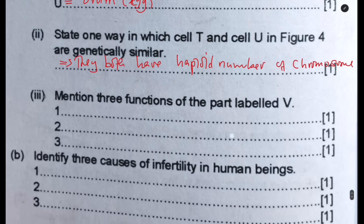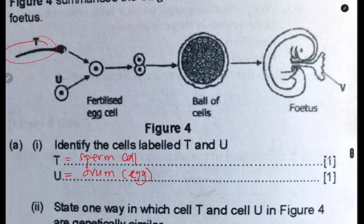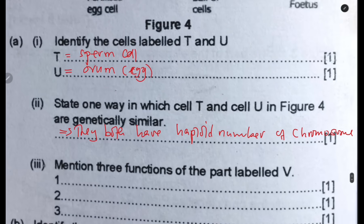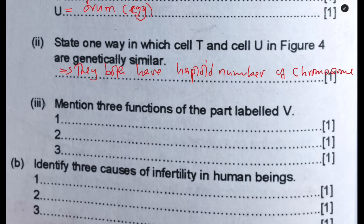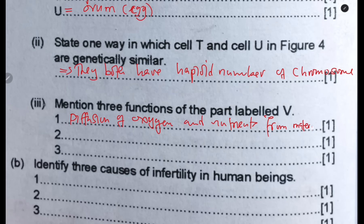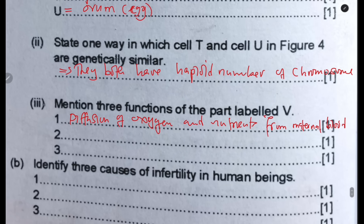Mention three functions of the part labeled U — the placenta. Function one: diffusion of oxygen and nutrients from maternal blood to fetal blood. Function two: diffusion of carbon dioxide, urea, and other wastes from fetal blood to maternal blood.